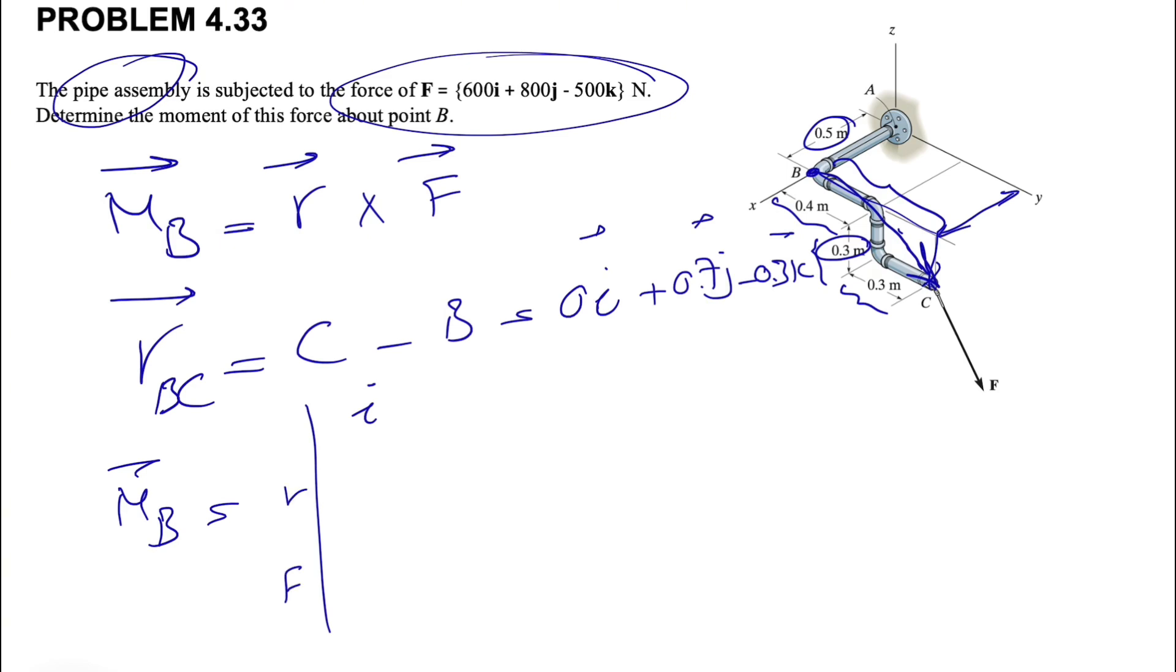What we have for R is 0 for I component, 0.7 for J, and -0.3 for K component or Z component. And the force is already in the vector form in the question. We have 600 for I, 800 for J, and -500 for K.